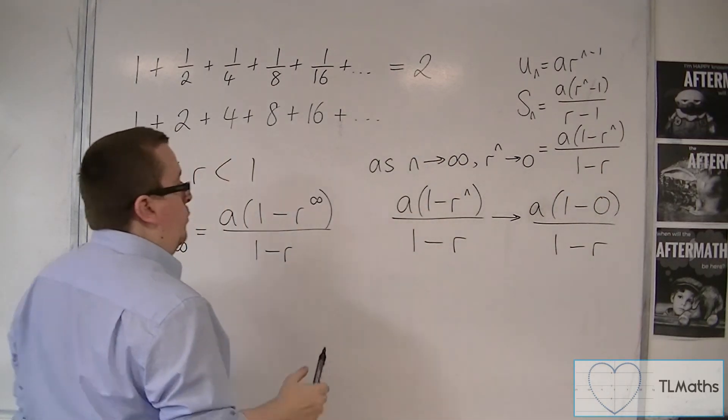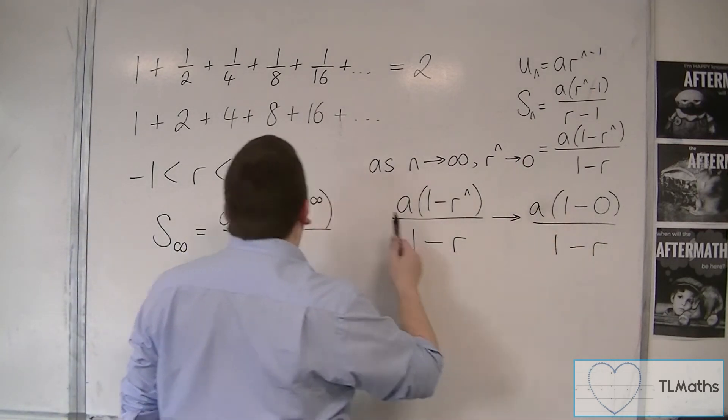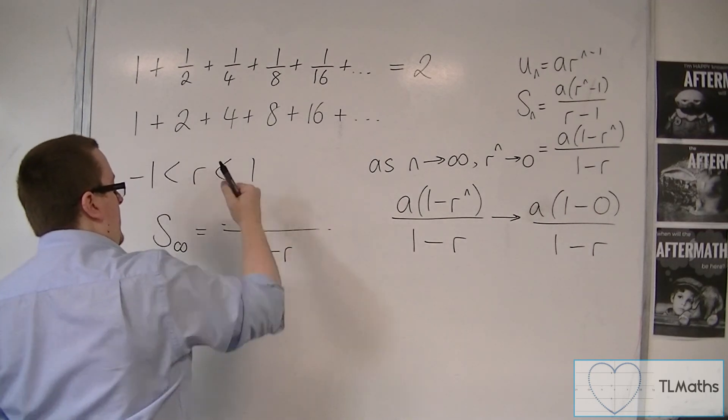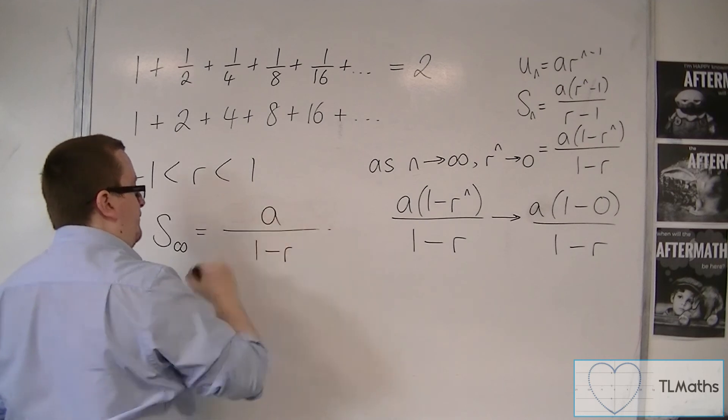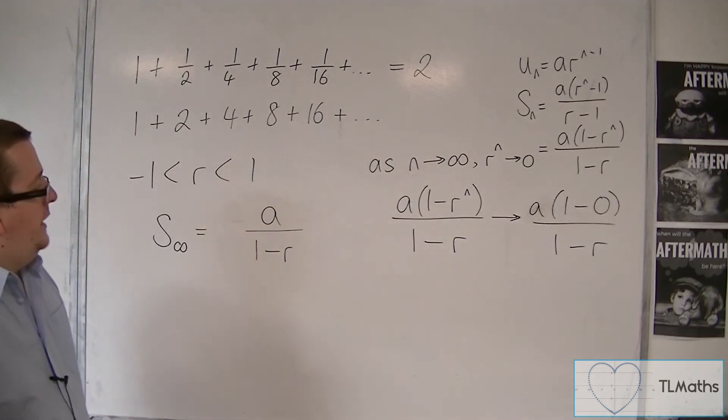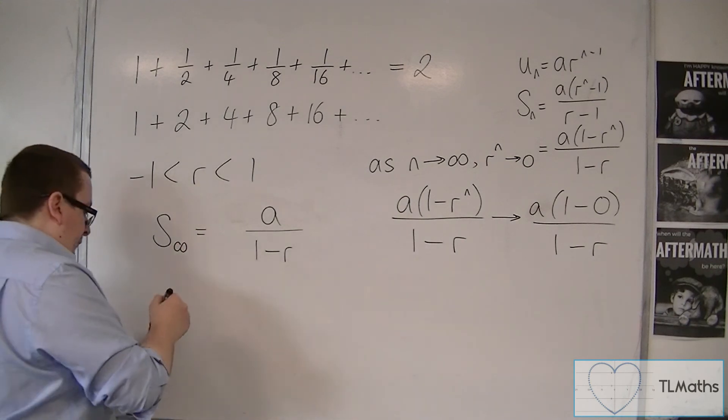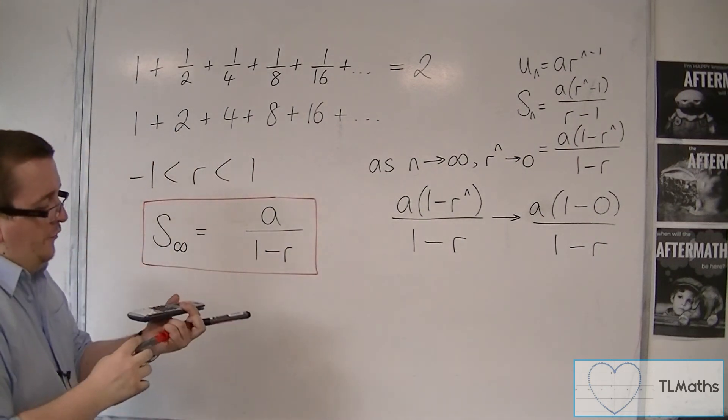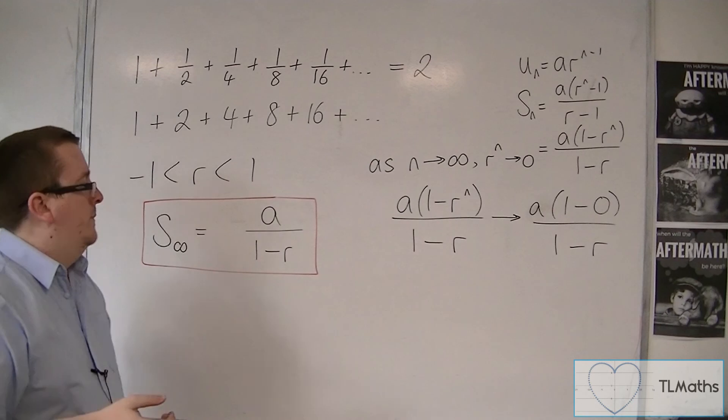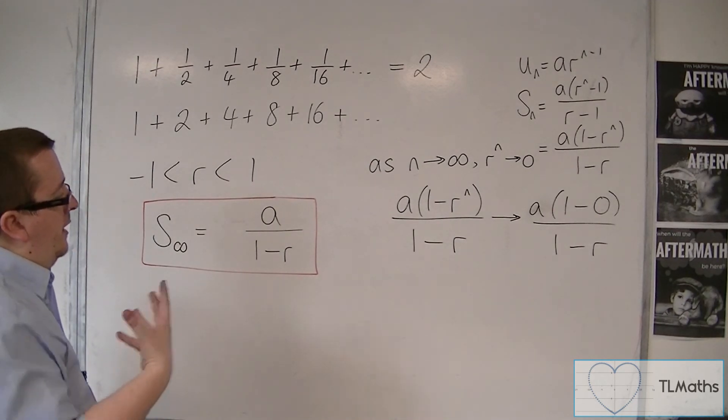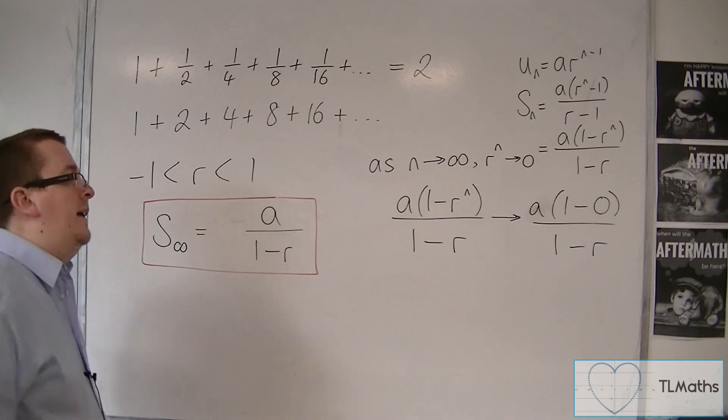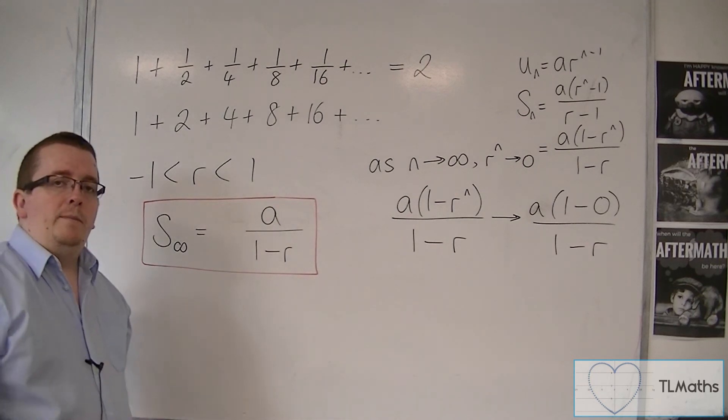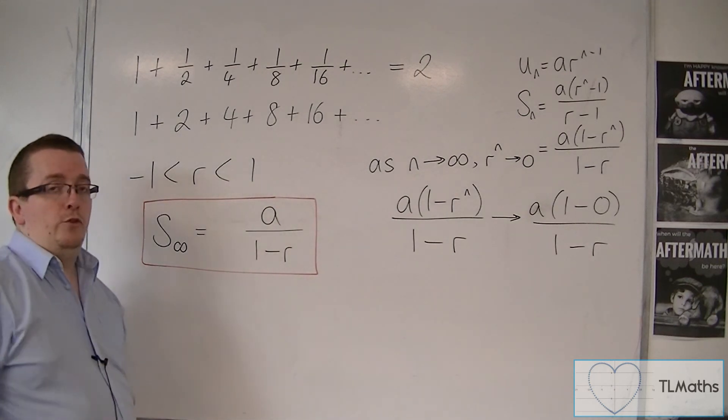And so we can simplify this because that's just a times 1. So as I said, I was going to scrub it off the board. And I'm just going to be left with a over 1 minus r. And that is the sum to infinity. This simple looking formula actually adds together an infinite number of terms, an infinite number of terms in a geometric series and pops out a value. And it is a very important and useful formula to have as part of our toolkit. And it is also given to us in the formula booklet.